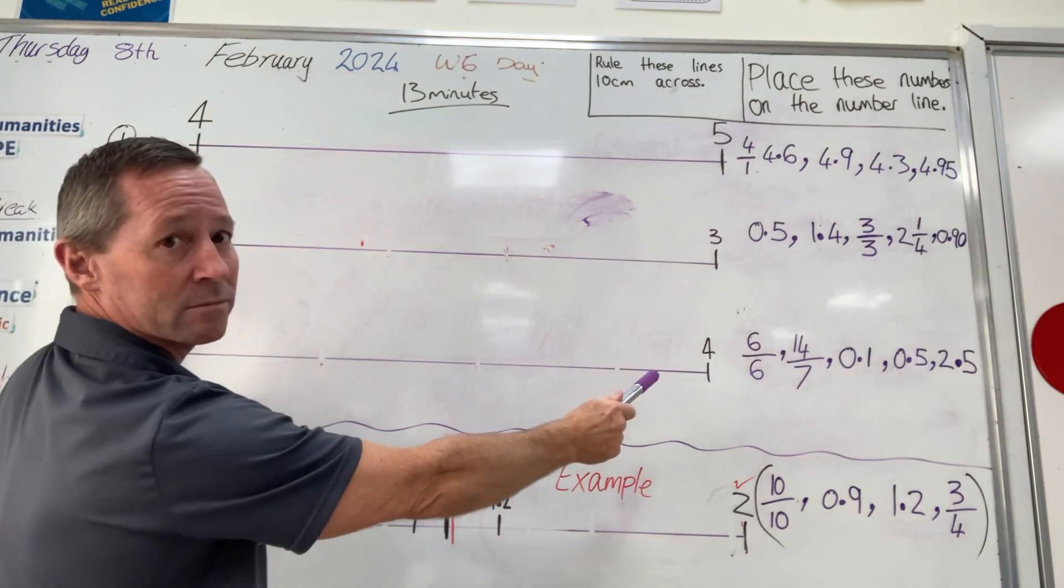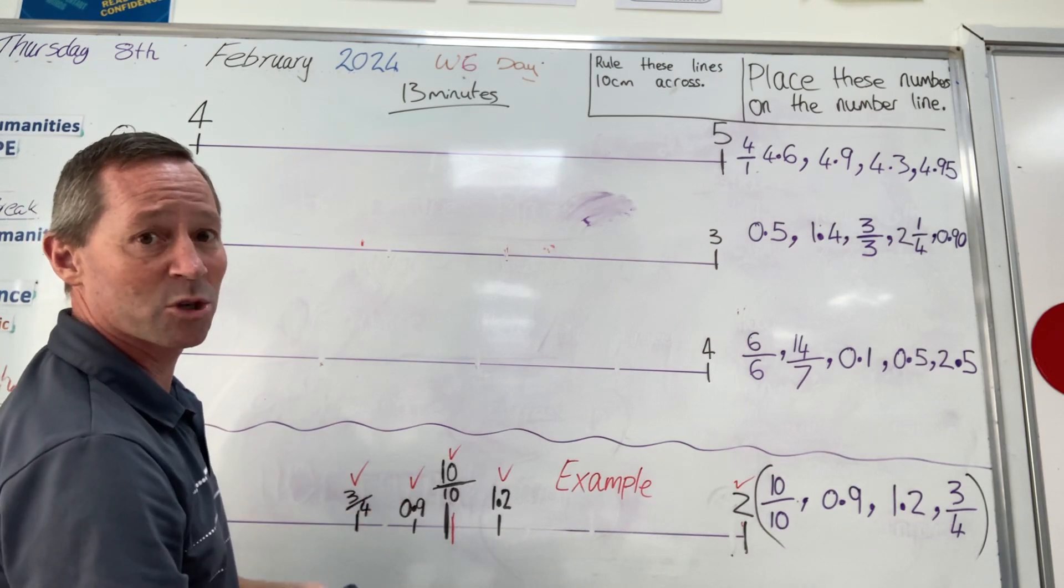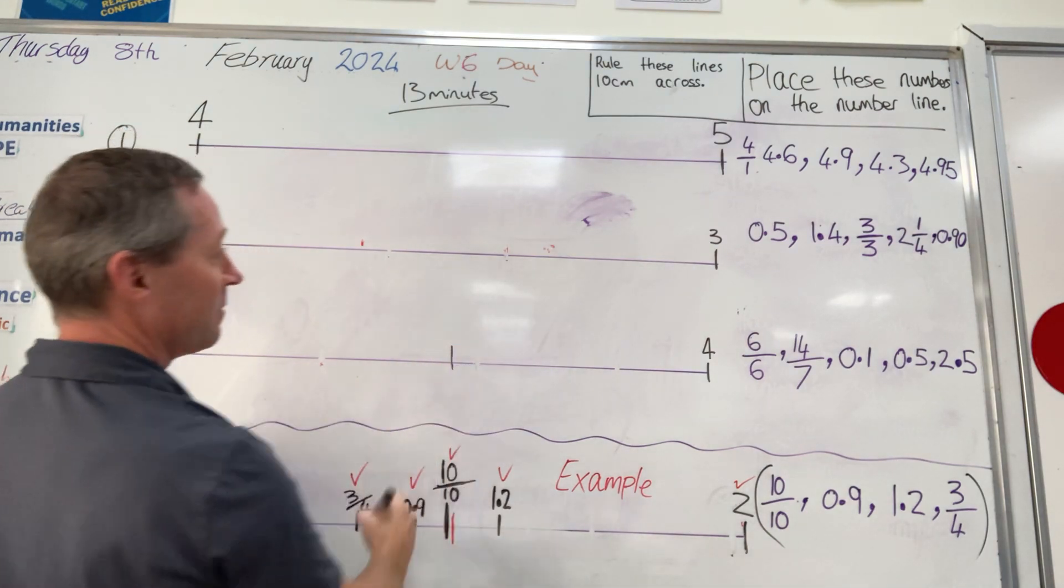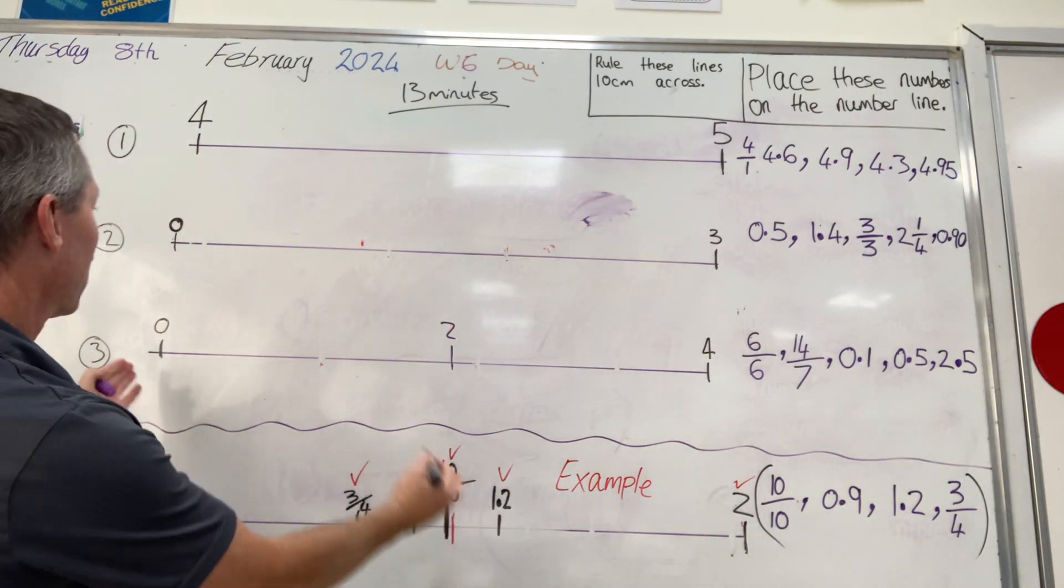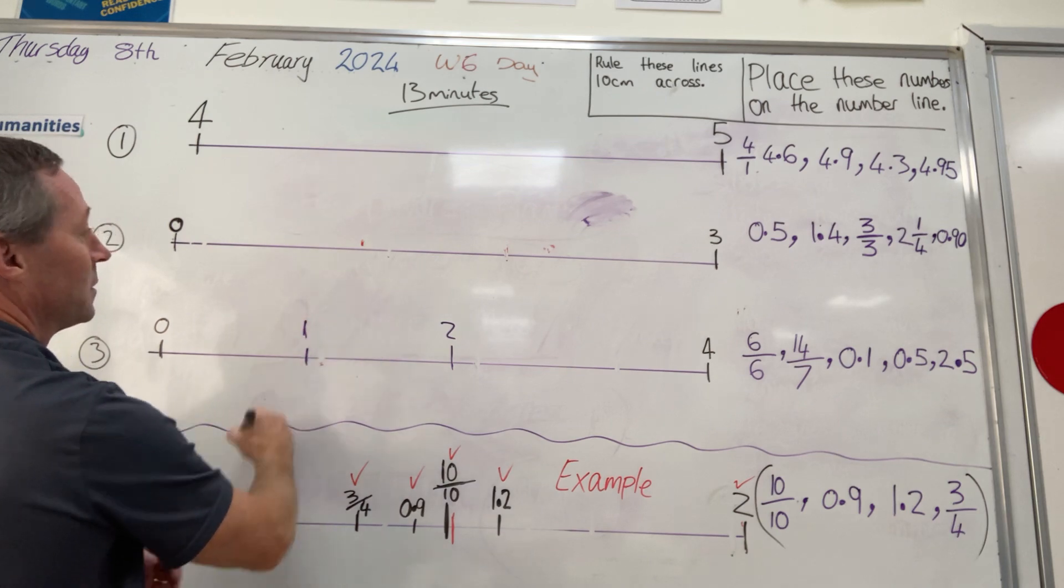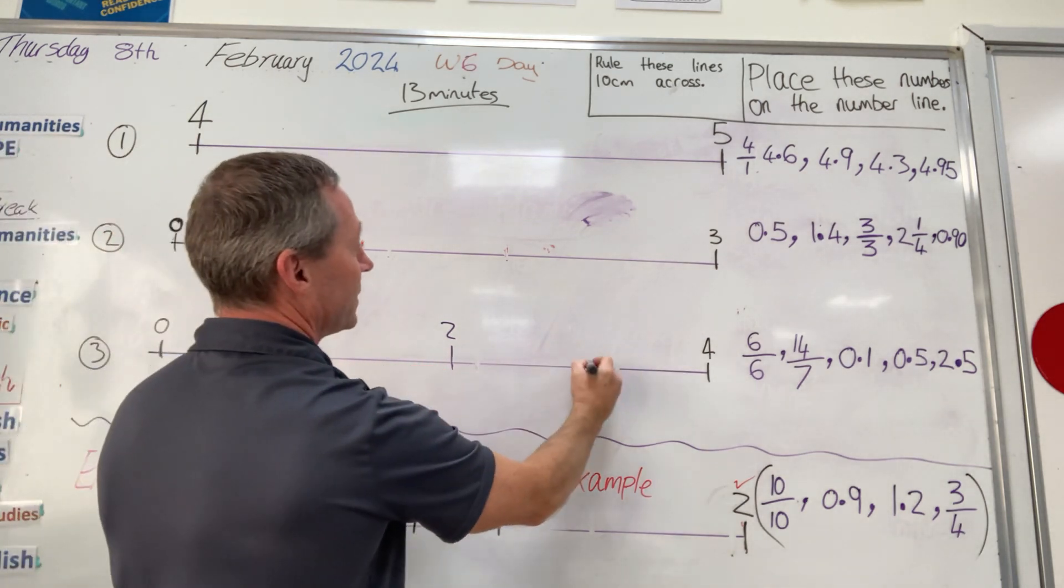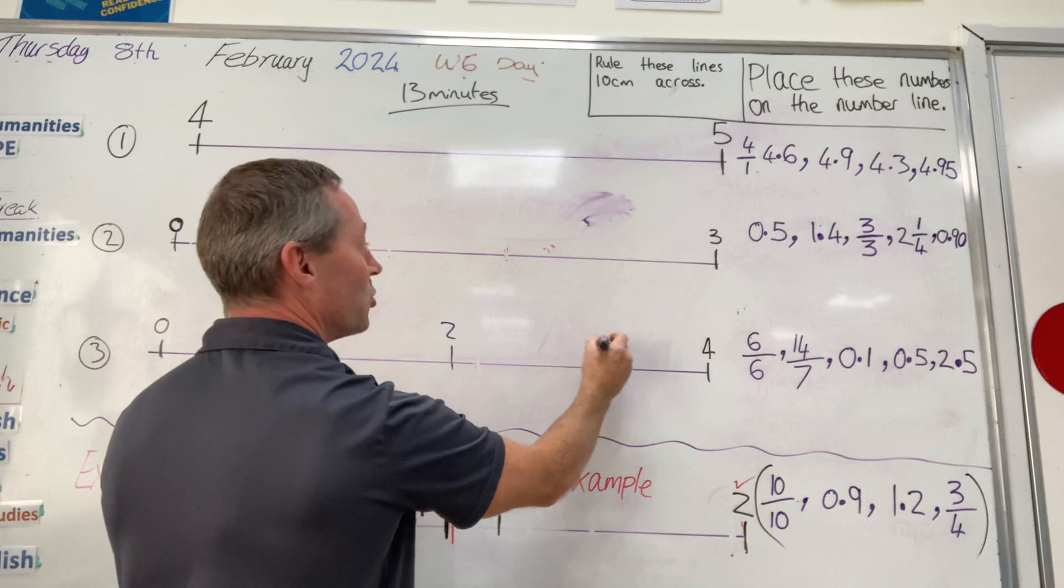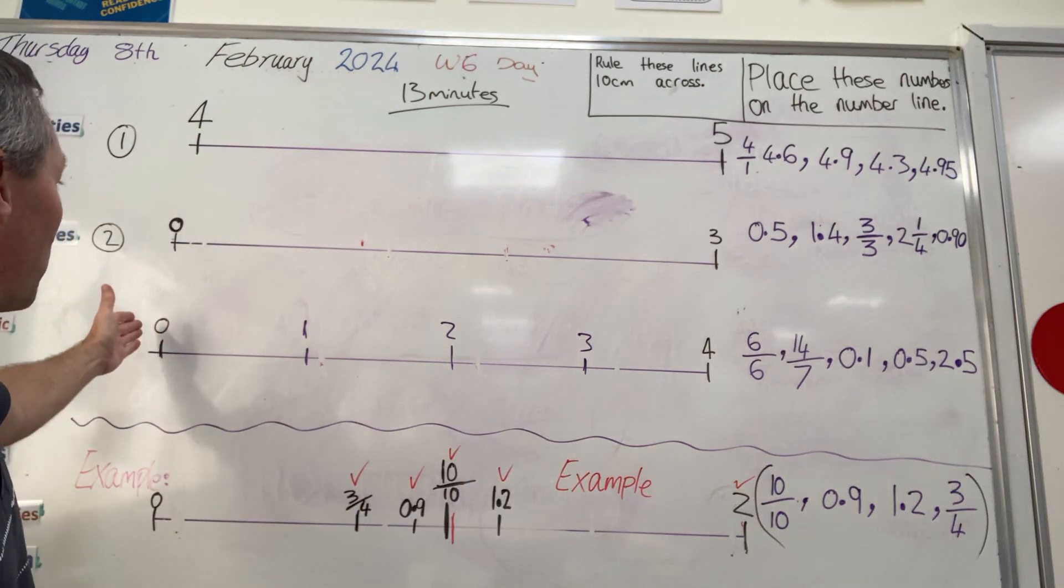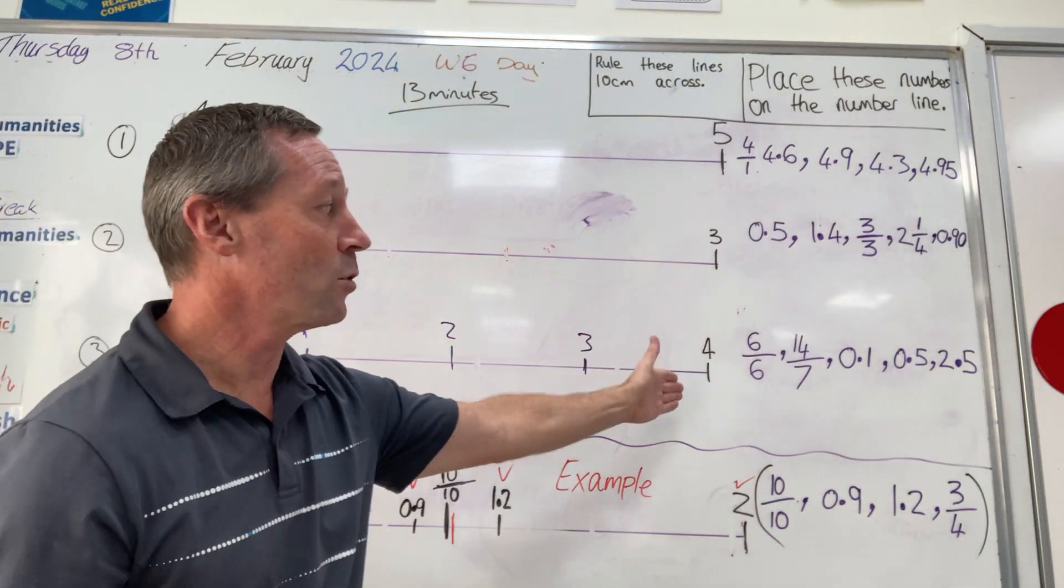So from 0 to 4, what's half of 4? 2. So 2 would be halfway, which is probably roughly about here I'd place 2. And halfway between 0 and 2 would be 1, and between 2 and 4 would be 3. So now my number line is 0, 1, 2, 3, 4.